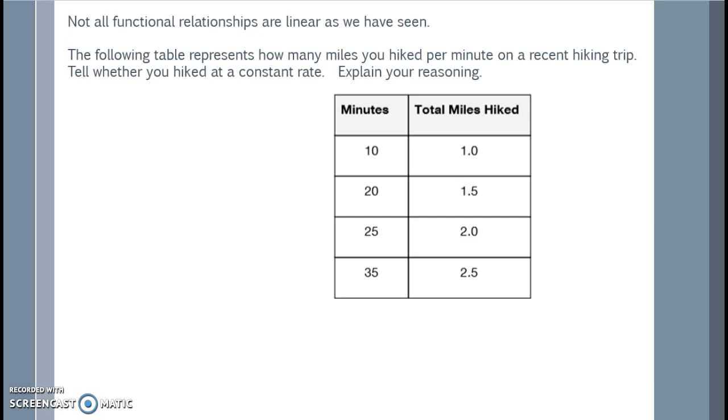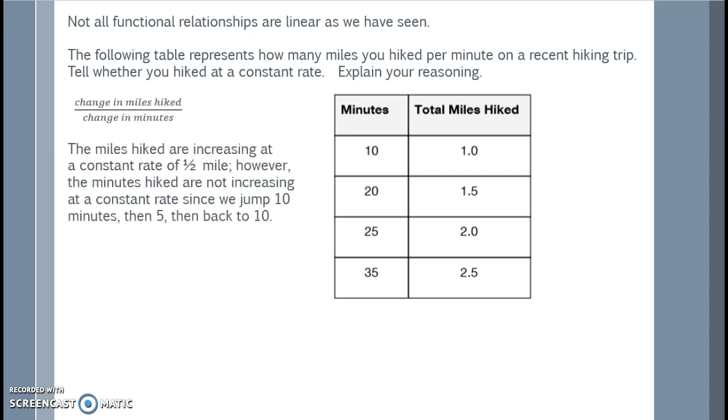The following table represents how many miles you hiked per minute on a recent hiking trip. Tell whether you hiked at a constant rate and explain your reasoning. So we're going to talk about the change in miles over the change in minutes. I see that the miles hiked are increasing at a constant rate of a half mile. However, the minutes hiked are not increasing at a constant rate since we jump 10 minutes, then 5, then back to 10. This would be a nonlinear function since we are not hiking at a constant rate.